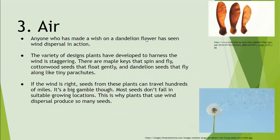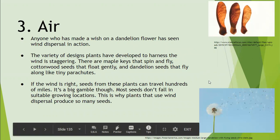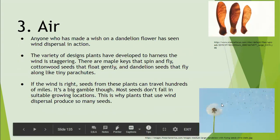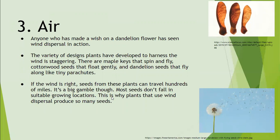The next method is air. Anyone who has made a wish on a dandelion flower — just like the picture we talked about — knows the wind takes the seeds away. There are a variety of plant designs developed to harness the wind: maple keys that spin and fly, cottonwood seeds that float gently down, and dandelion seeds that fly like little tiny parachutes. If the wind is just right, seeds can travel hundreds of miles. It's a big gamble though — most seeds don't land in suitable growing locations, which is why plants using wind dispersal tend to produce more seeds.